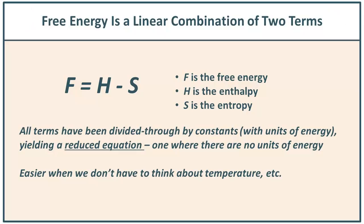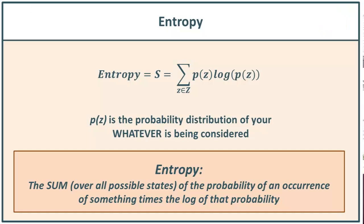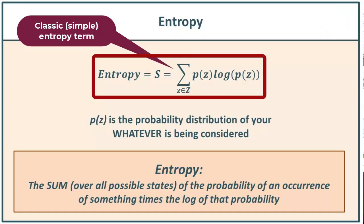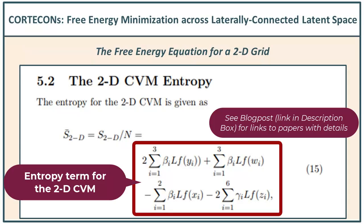But that leaves us in the free energy equation with just one other term — the entropy term. So for the cluster variation method, what we do is we play with that entropy term and make it a little bit more complex. We're going to use this free energy equation called the cluster variation method that has a more complicated entropy term, and we'll discuss that in more detail at a different time.